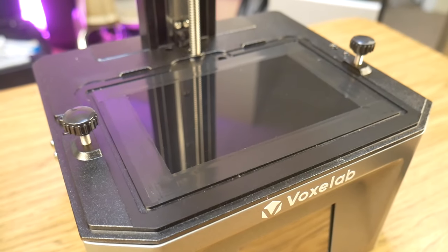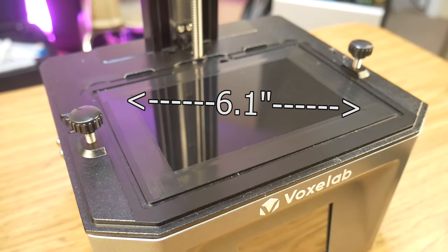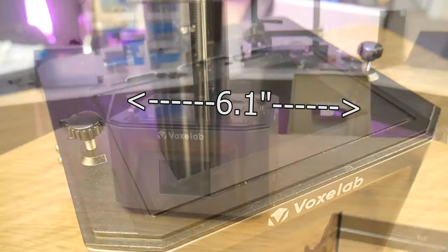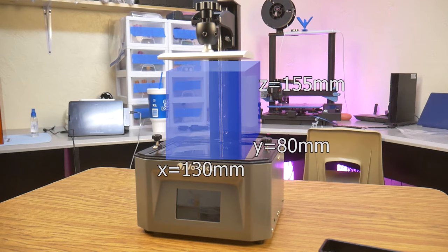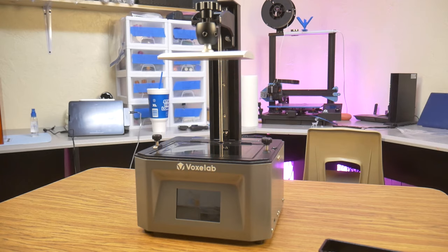The screen measures 6 inches diagonally, which gives you a print volume of 130 by 82 by 155 millimeters, which is expected in this category of monochrome 2K screens. They all seem to have this build volume or something very similar to it.